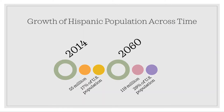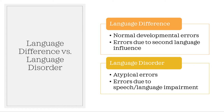Another important reason to learn about Spanish-influenced English is that Hispanics are among the fastest-growing groups in the US. According to the US Census Bureau, between 2014 and 2060, the Hispanic population is projected to increase from 55 million in 2014, accounting for 17% of the US population, to 119 million in 2060, accounting for 29% of the US population — an increase of 115%. Because of this growth, and because Spanish-speaking ELLs make up the majority of ELLs on SLPs' caseloads, it is imperative that SLPs are able to distinguish between a language difference and a language disorder.